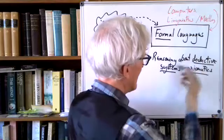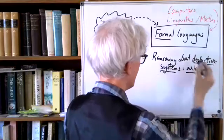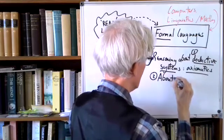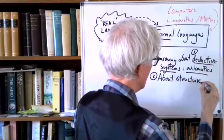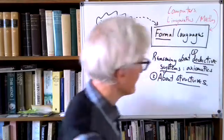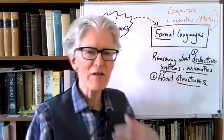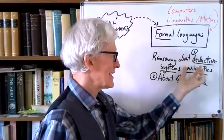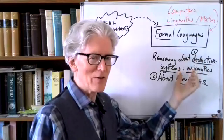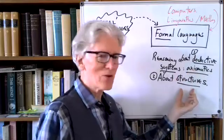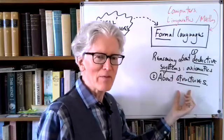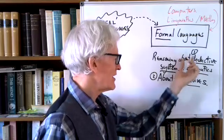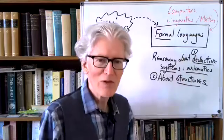So reasoning about deductive systems and axiomatics — this will be the first thing. And secondly, about structure. This is a divide that runs through the course: we're trying to look at things like syntax, proof, and language on one side, and at the same time we want to talk about structures, semantics, meaning — what it means for something to be true in a structure.